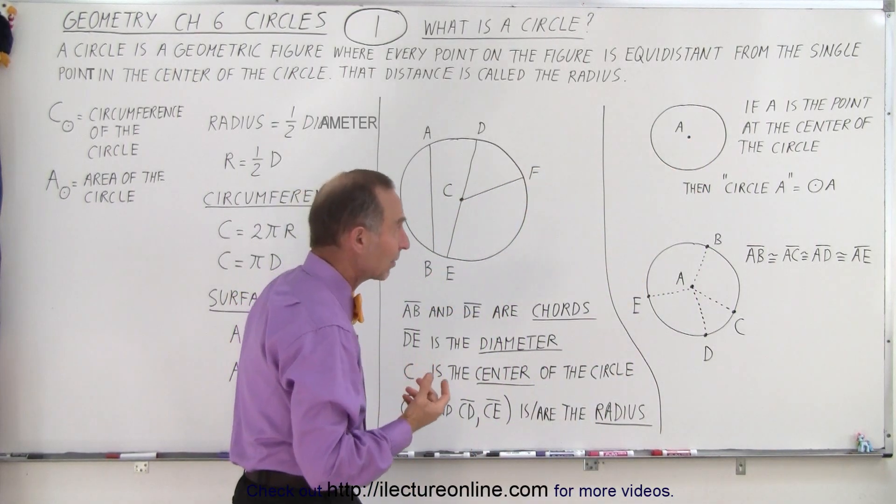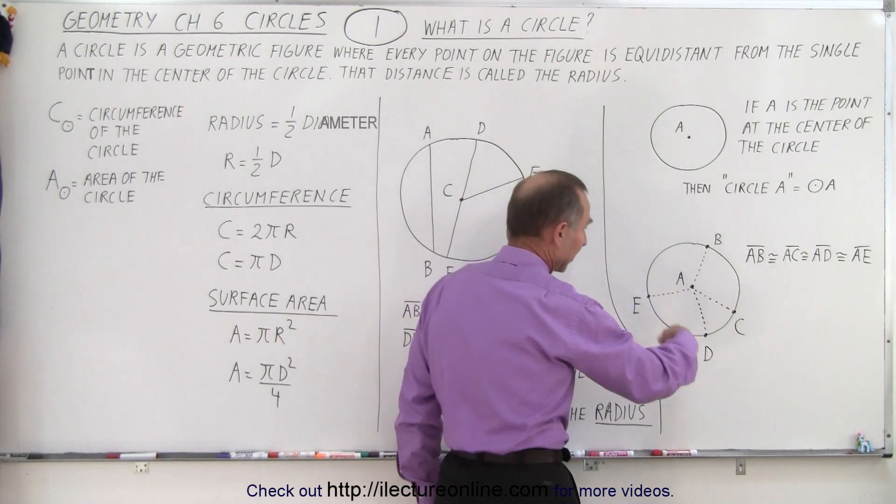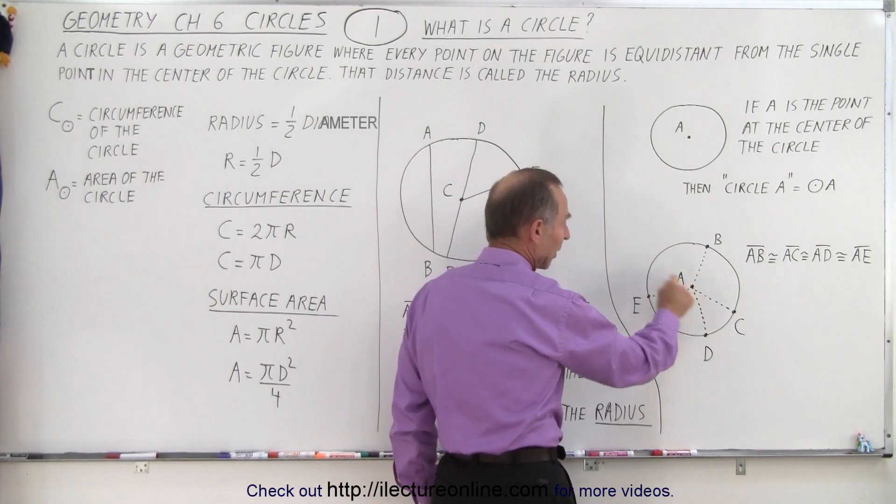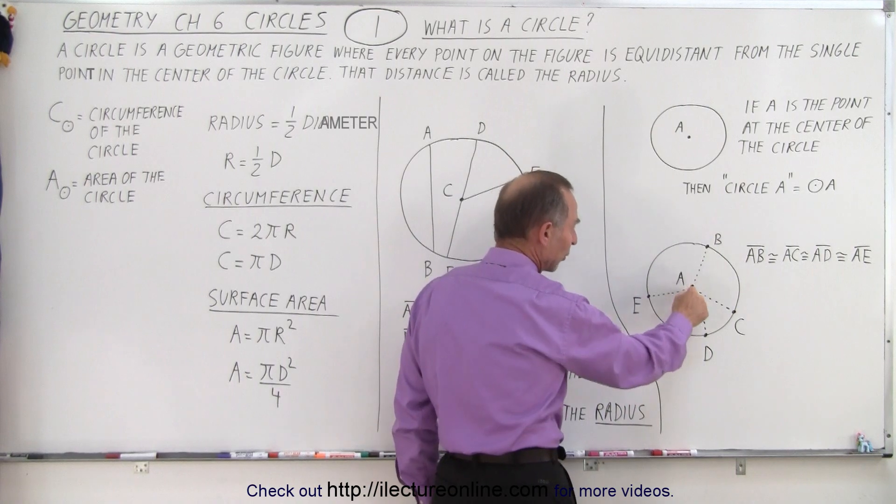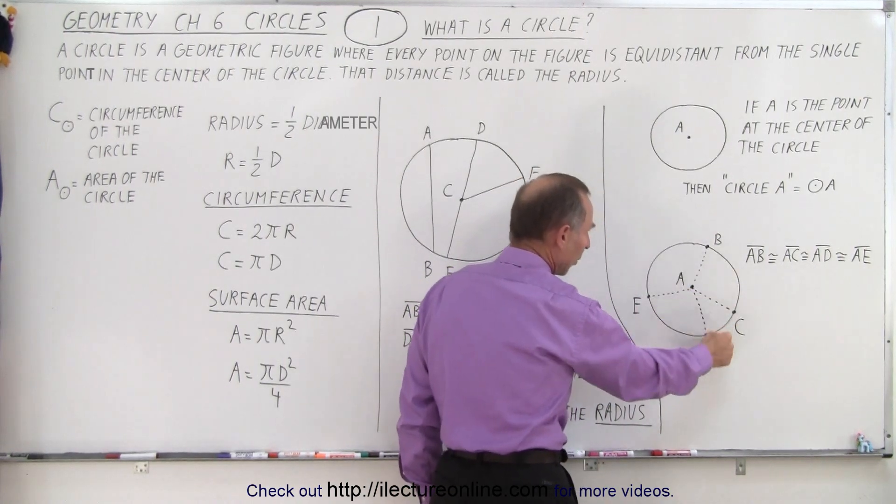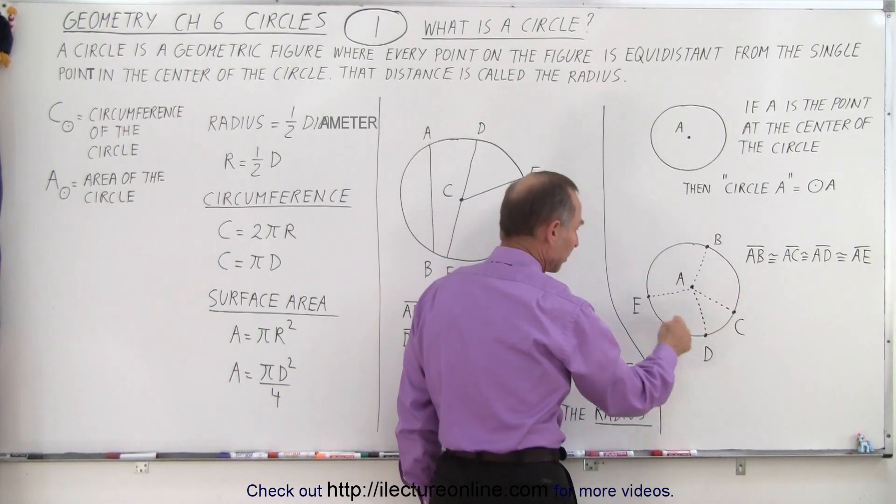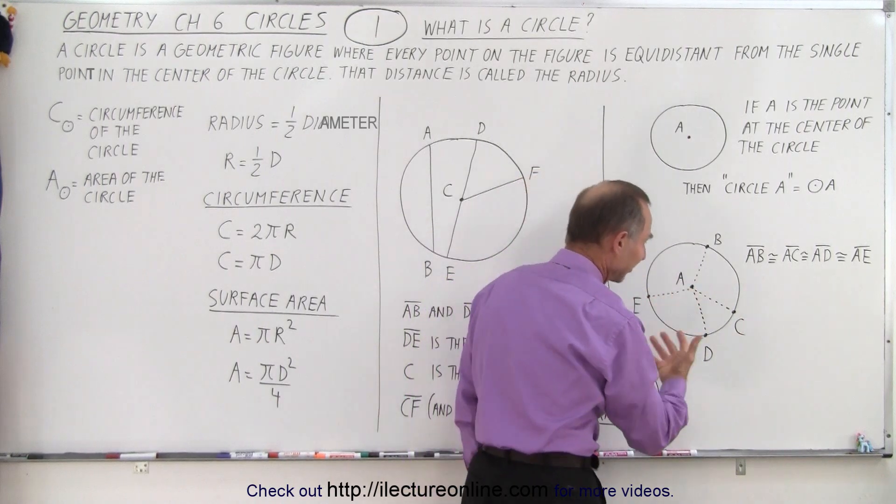Then you can say that the distance, for example, here we have an example where we have a circle. A here represents the point at the center, and notice the distance from any of these points, point B, point C, point D, point E, to the center is the same distance.